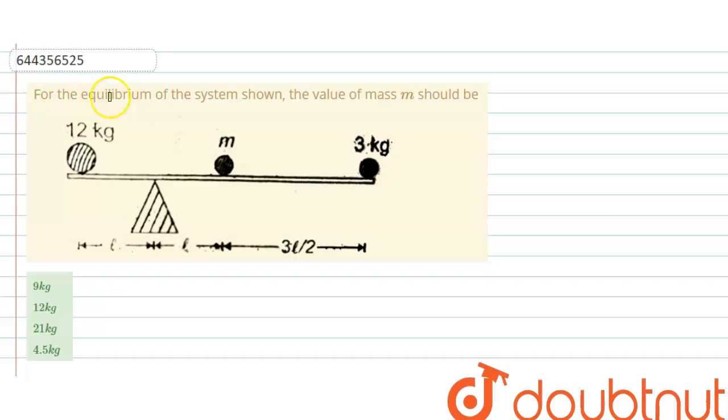Hello everyone, let me explain this question to you. For the equilibrium of the system shown, the value of mass M should be - this is the diagram given and there are four options also given.